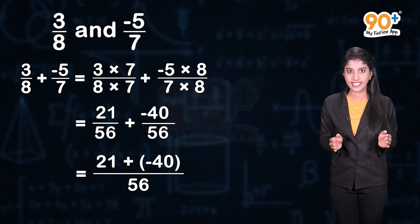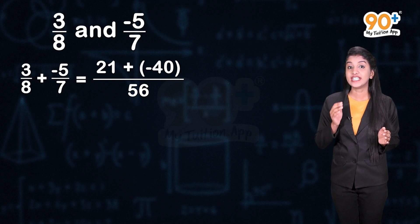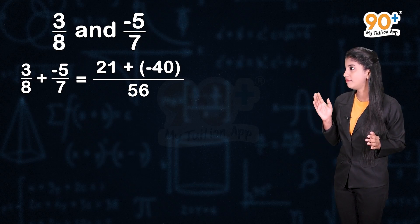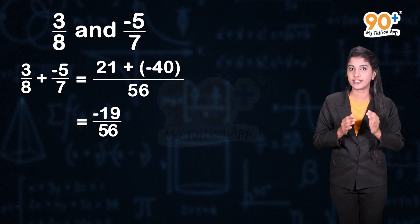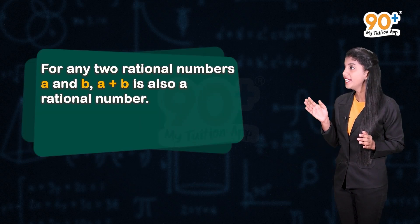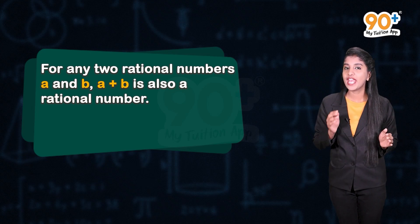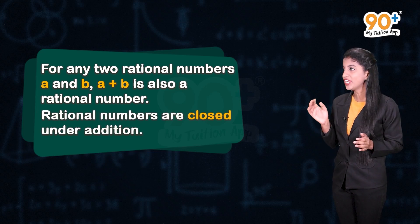This equals 21 plus minus 40 divided by 56. Adding 21 with minus 40 we get minus 19. Thus, 3 divided by 8 plus minus 5 divided by 7 equals minus 19 divided by 56, which is again a rational number. So in general, for any two rational numbers a and b, a plus b is also a rational number. Thus, rational numbers are closed under addition.